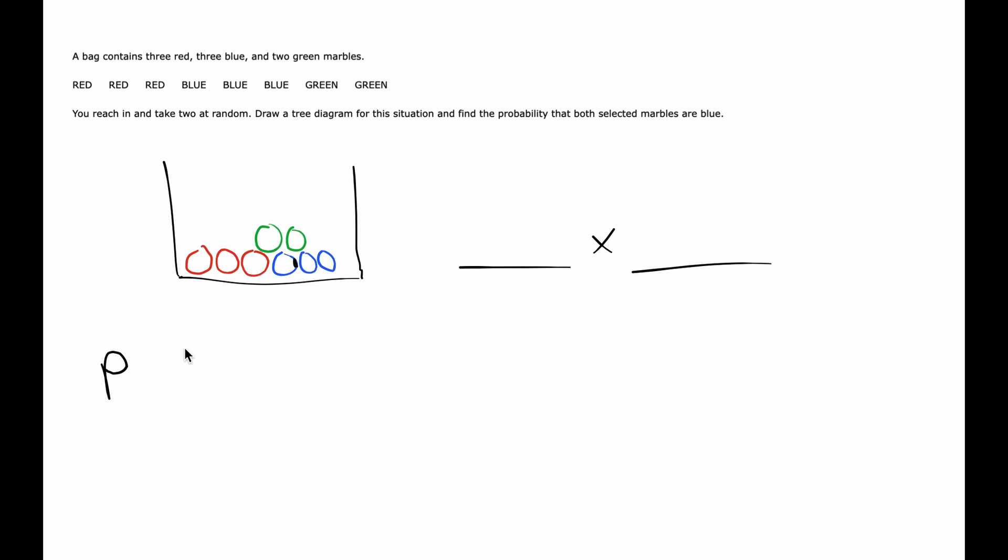Because what we're finding is an 'and': the probability of the first being blue and the second choice being blue is what we're looking for.